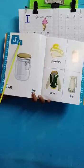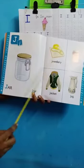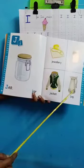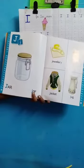J for jar, J for jewellery, J for jam, J for jacket, J for jug. So you will be learning I and J for homework.